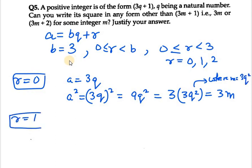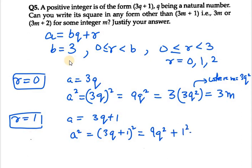Now for r equals 1, it is a equals 3q plus 1. a square equals 3q plus 1 whole square. So it can be written as 9q square plus 1 square plus 2 into 3q, that will be 6q. I will be keeping 1 at the back, so we are left with 9q square plus 6q plus 1. Now we need to bring 3 outside, so 3 times 3q square plus 2q plus 1.